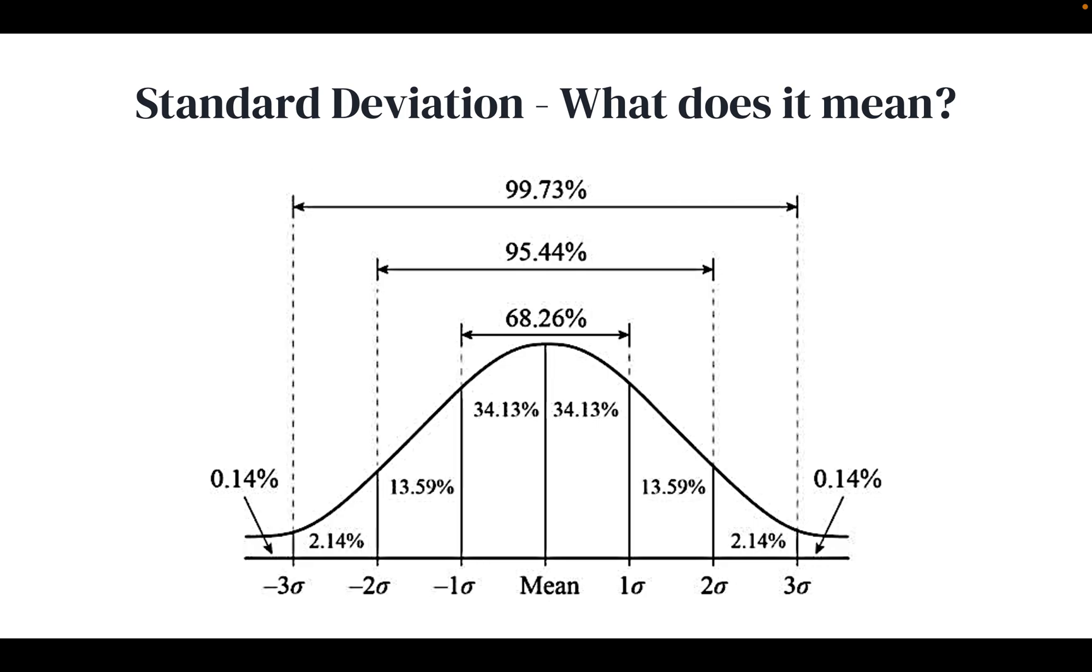What standard deviation really means is that within one standard deviation around the mean value, from negative 1 to the positive 1 standard deviation interval, we should expect to have 68% of the data lying within this interval, within these values.